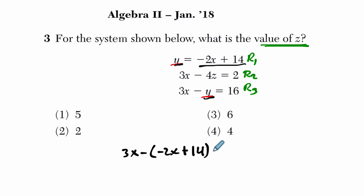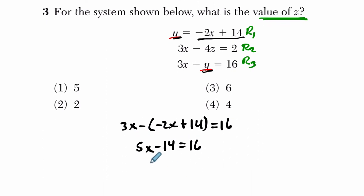And then I'll just solve for x. So we've got 3x minus negative 2x, that's 3x plus 2x, or 5x. And then minus 14, we're subtracting the whole thing. And that equals 16. And I solve for x. Add 14 to both sides. 5x equals 30. So divide by 5 and x is 6.